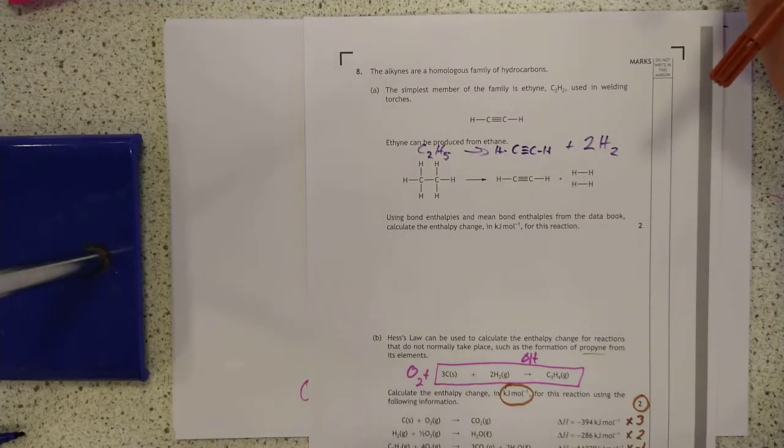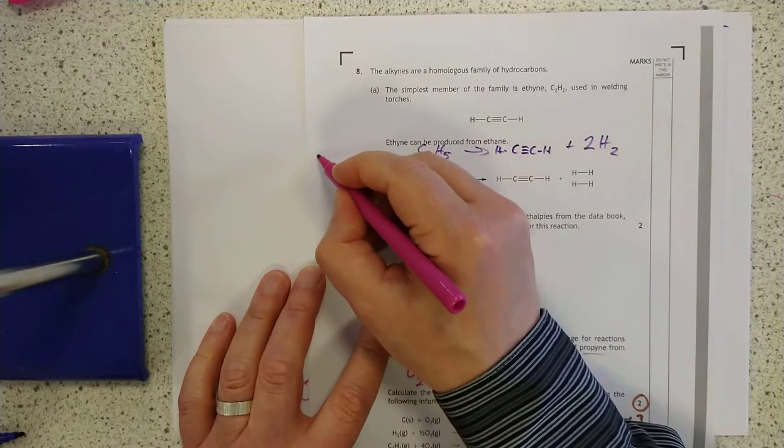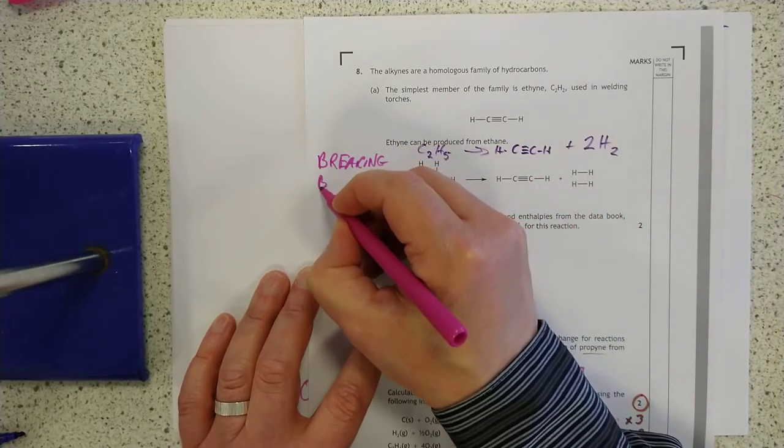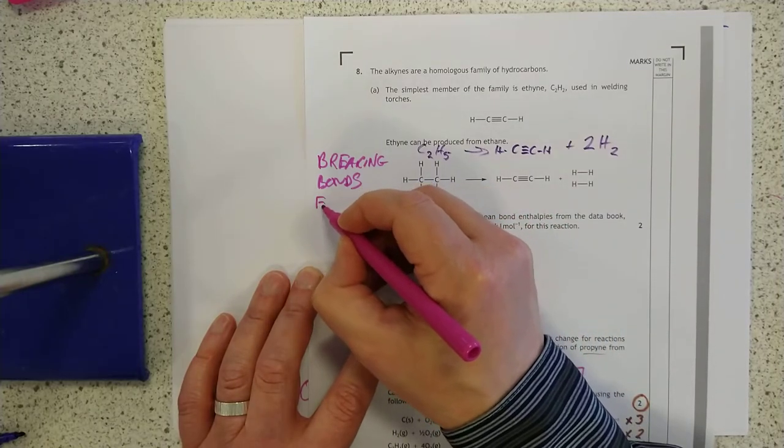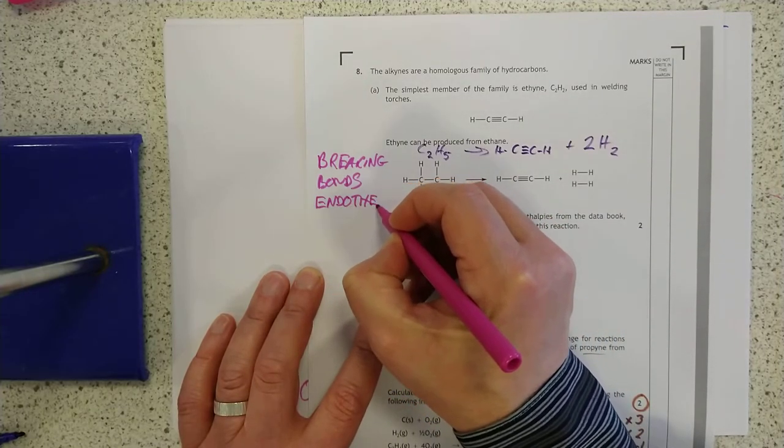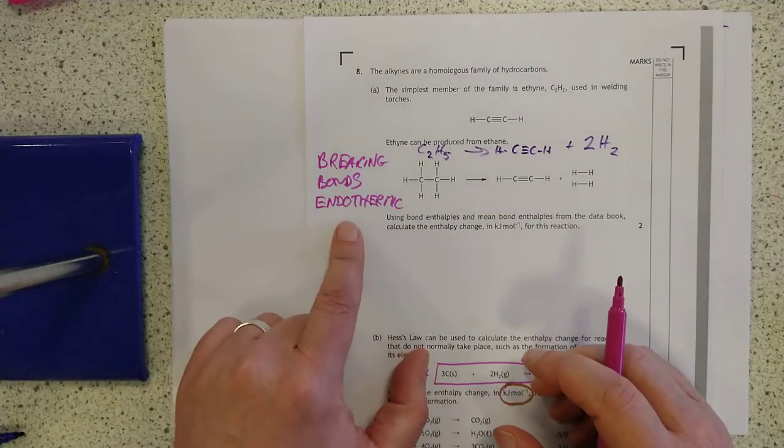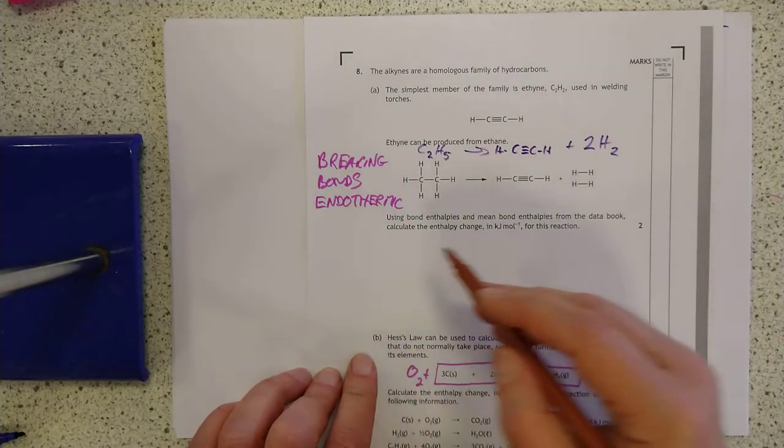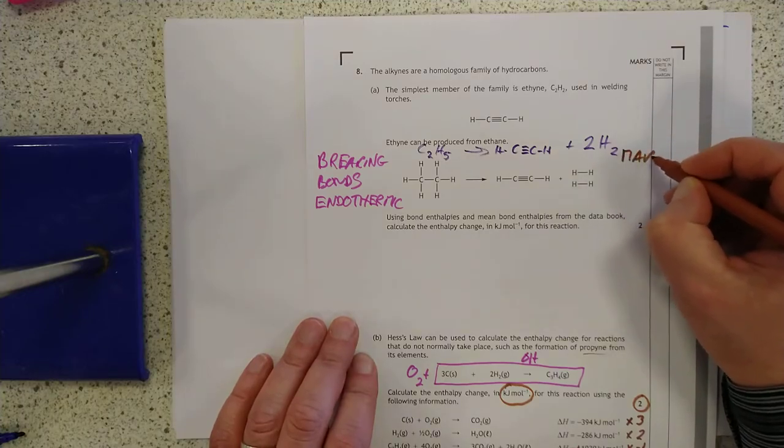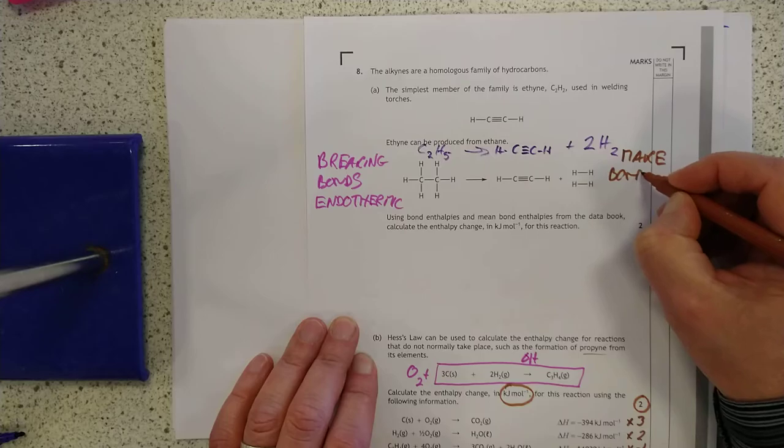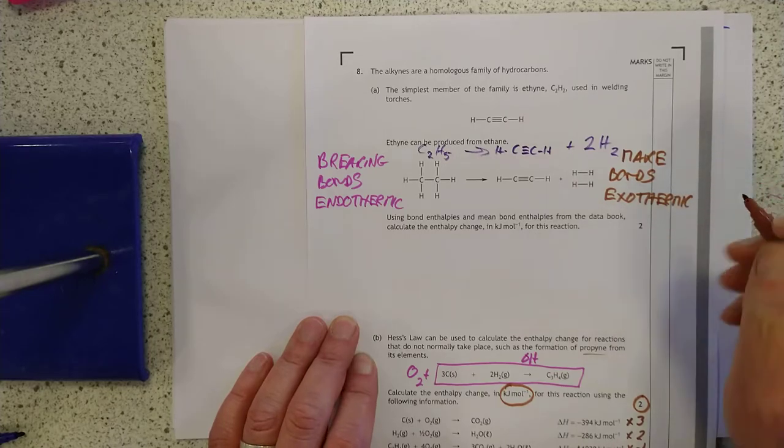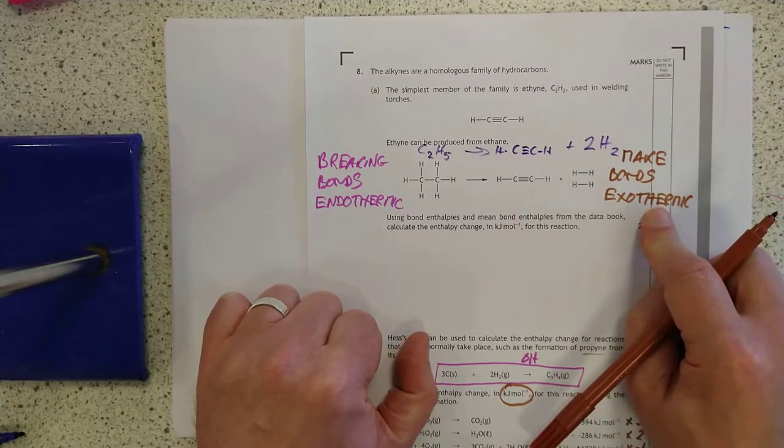Politicians love slogans that are made up of three words. So we should come up with two slogans here to help you remember this. Let's start with this one. Breaking bonds is endothermic. In other words, to break bonds, you need to supply energy to the bond. Sort of makes sense. Slightly weird, but the opposite also applies. So making bonds, any new bonds you make, is exothermic process.